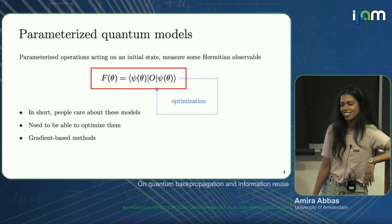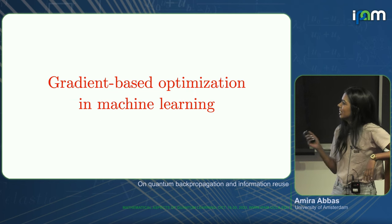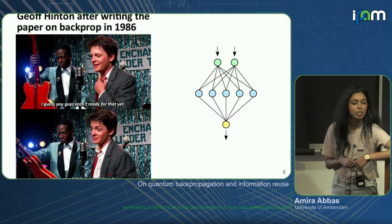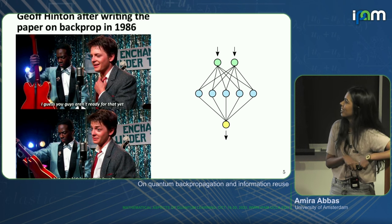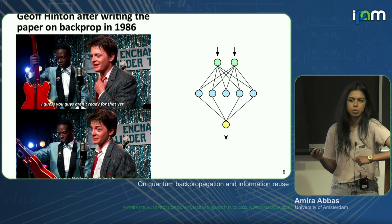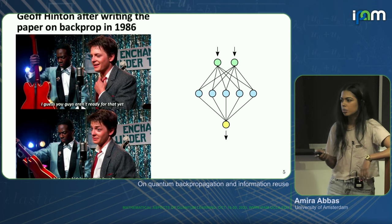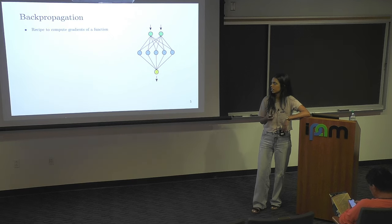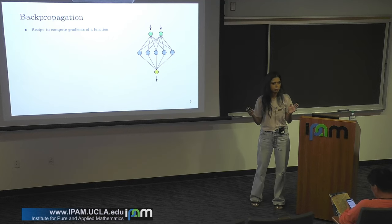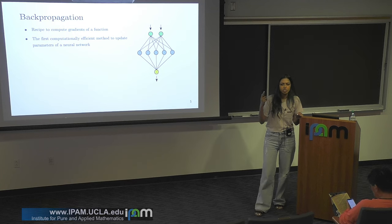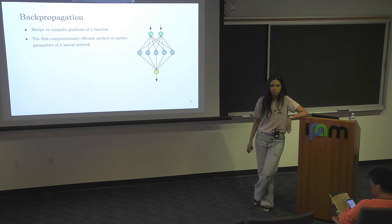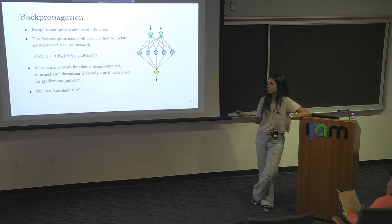Gradient-based methods are the leading way to optimize parameterized functions classically. Just a brief interlude on the success of gradient-based optimization in classical machine learning. Neural networks in particular were really quite successful because we were able to optimize them with this really nice algorithm called back propagation, which I'm sure the majority of people here know a lot about. Back propagation is just a recipe or an algorithm to compute gradients of a parameterized function, and it was the first computationally efficient method to do this for neural networks.